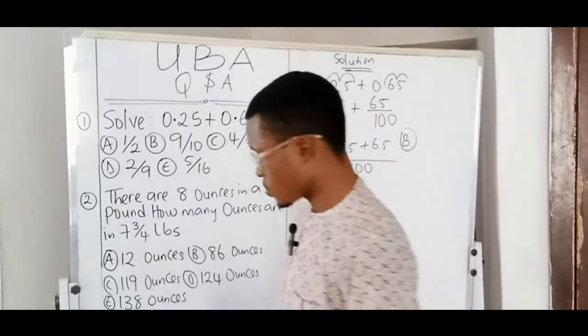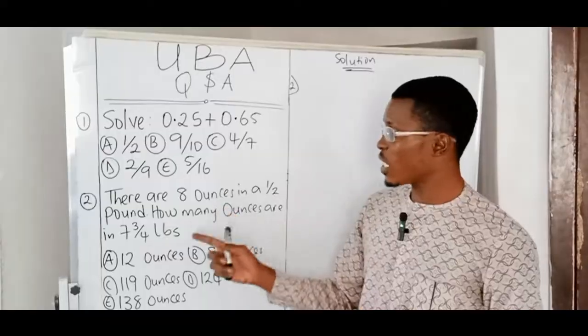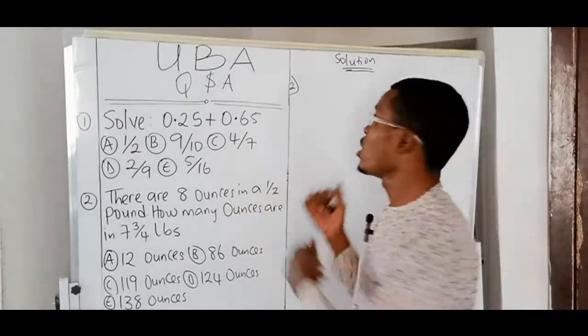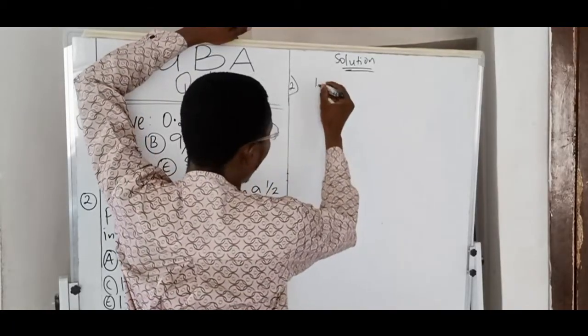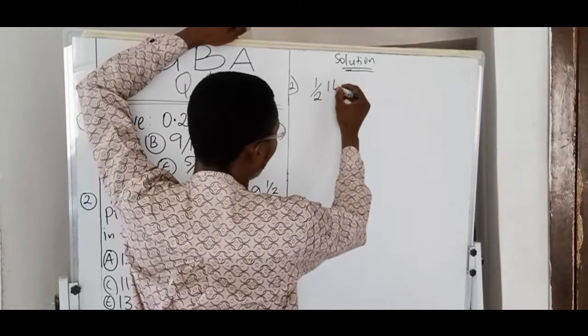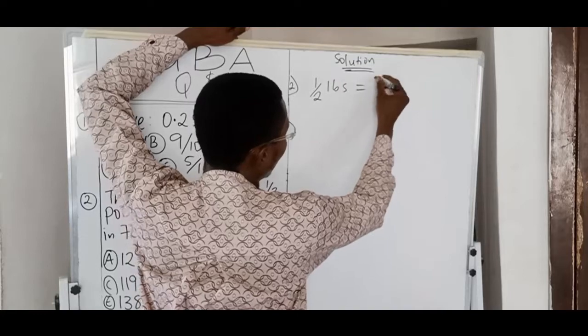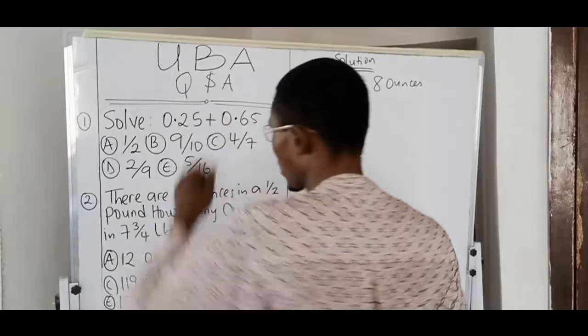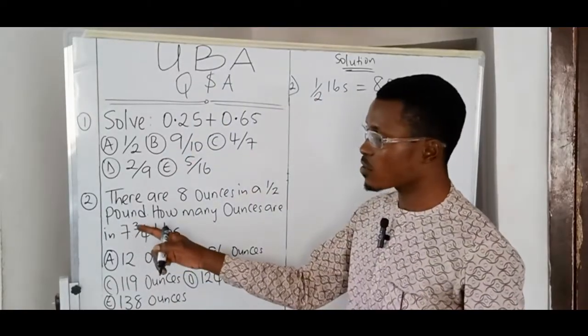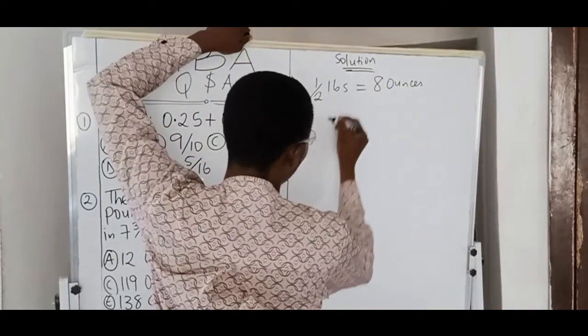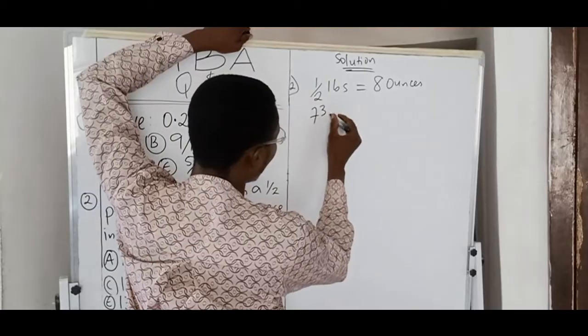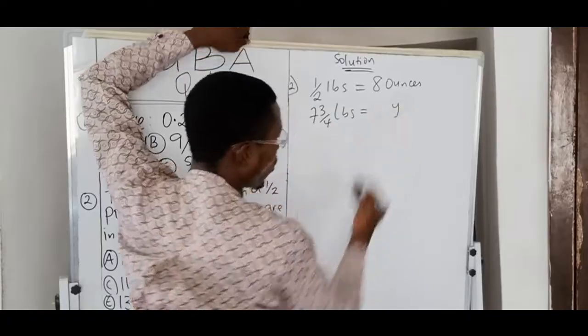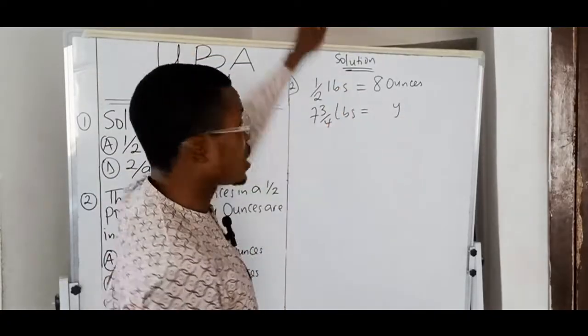Now, we move to number two. Now, for number two, we're told that eight ounces are in half pound. Let us interpret this. Half pound LBS contains eight ounces. Now, they're asking us how many ounces do you have in 7¾ pounds? So, you write it under pounds here. 7¾ LBS will contain how many pounds? You don't know. Let's make it Y. Have something like this. Then, we'll do what? We cross-multiply like this.